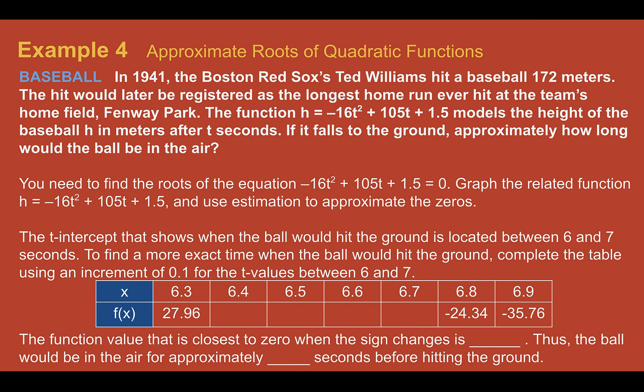So we need to find the roots to find when it would hit the ground, right? The x-axis is usually the ground. So when that hits the ground, if we can find the zeros, then we'll be able to approximate how long it will take. Here, though, they're calling it the t-intercept because we are using our t-value instead of x and then height for h instead of y.